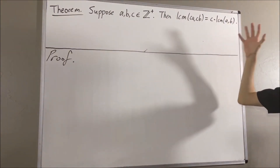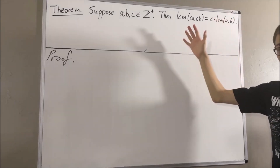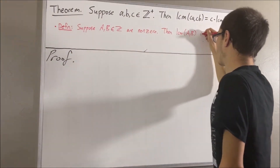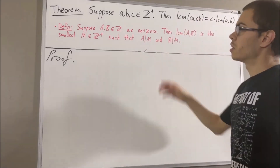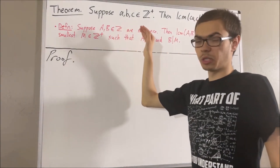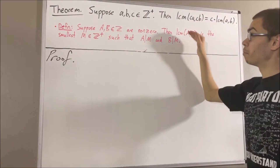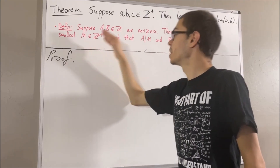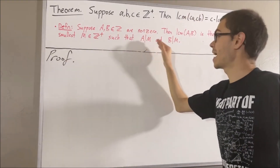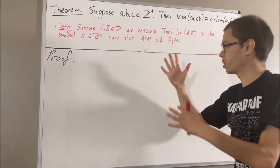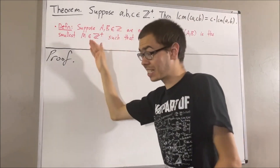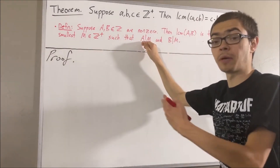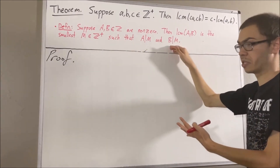Now let's remind ourselves the definition of least common multiple. Suppose a and b are non-zero integers. Then the least common multiple of a and b is the smallest positive integer n such that a divides n and b divides n. In other words, the least common multiple of a and b is the smallest positive integer m such that m equals a times some integer and m equals b times some integer.